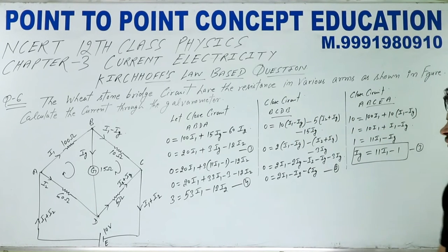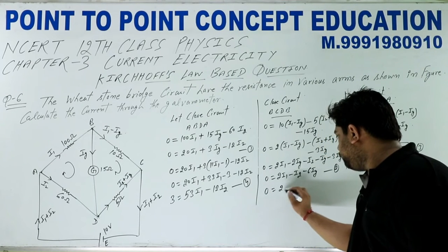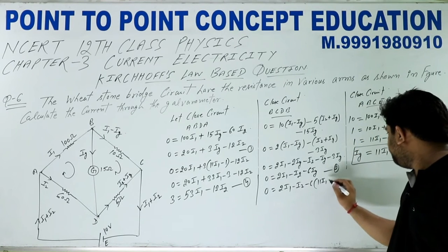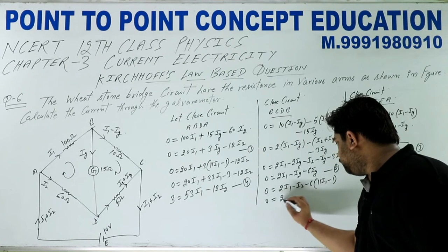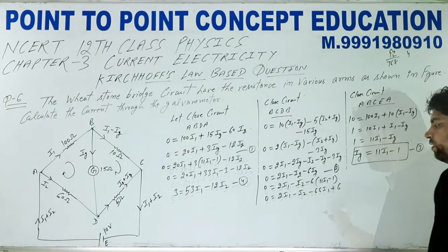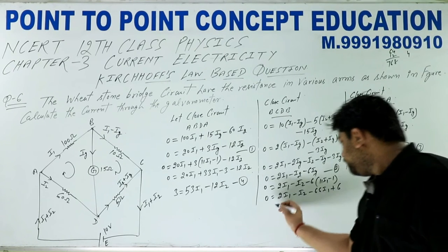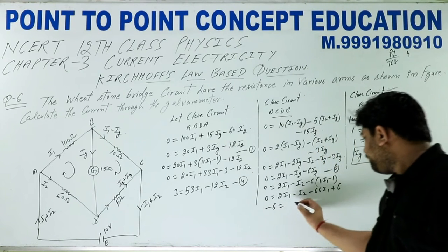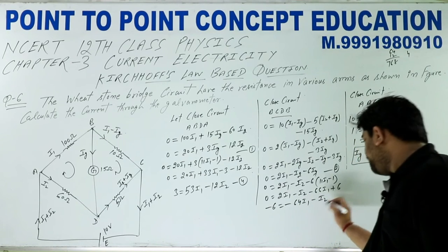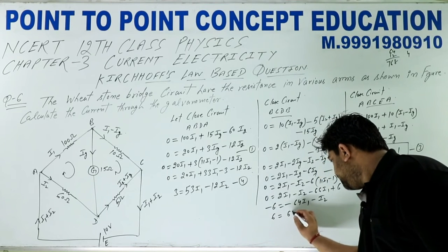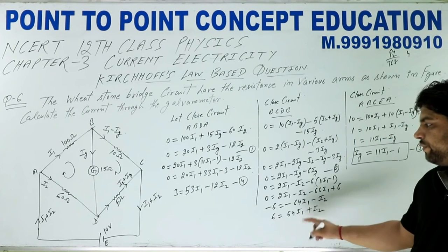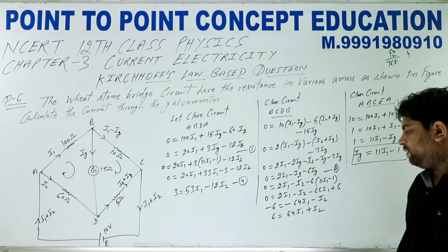Equation 2 में IG की value = 11·I1 - 1 put करते हैं: 2·I1 - I2 - 6·(11·I1 - 1) = 0, जो होगा 2·I1 - I2 - 66·I1 + 6 = 0, यानी minus 64·I1 - I2 = -6, या 64·I1 + I2 = 6। यह है Equation number 5। इस Equation 5 को 12 से multiply करके लिखें।